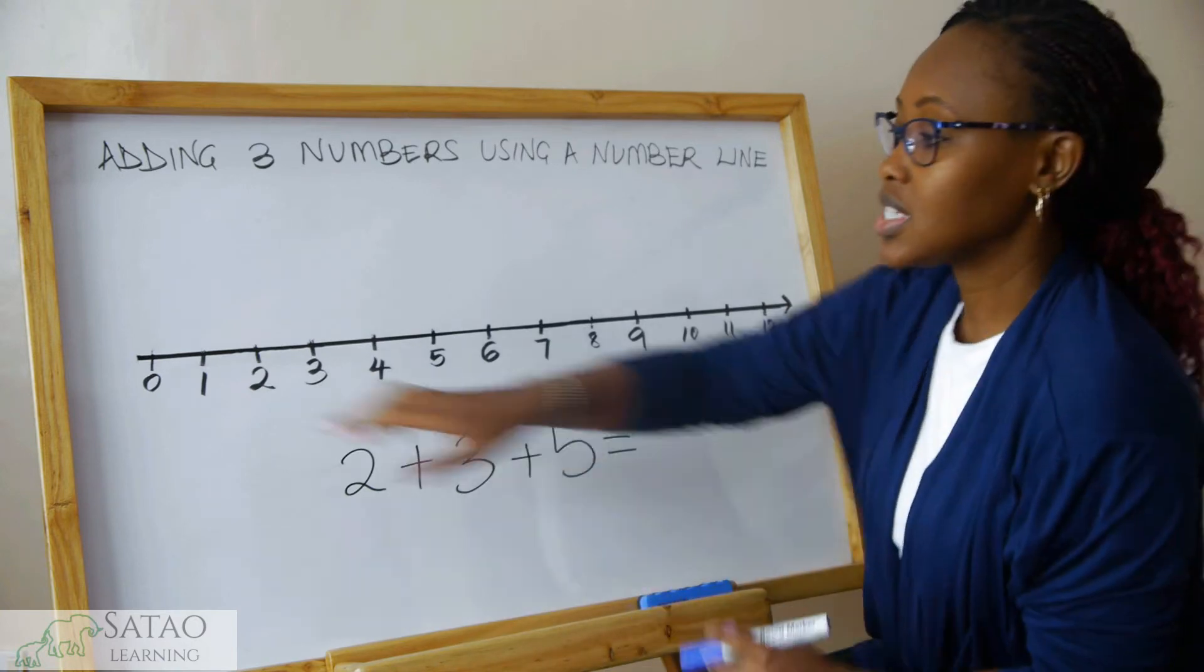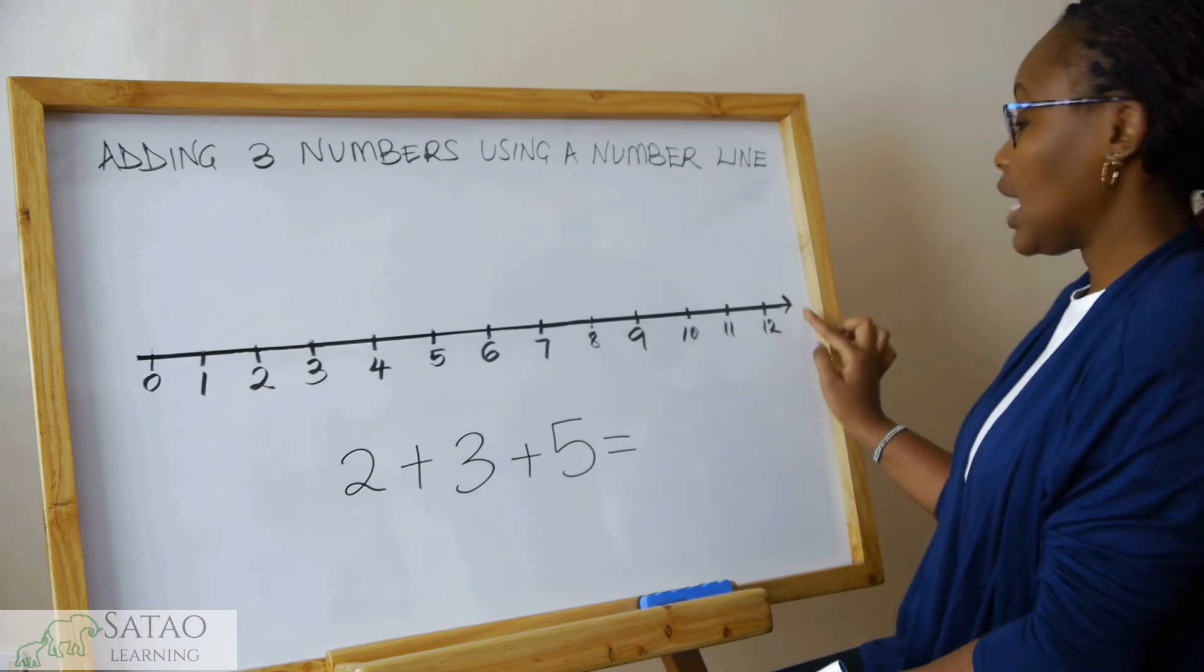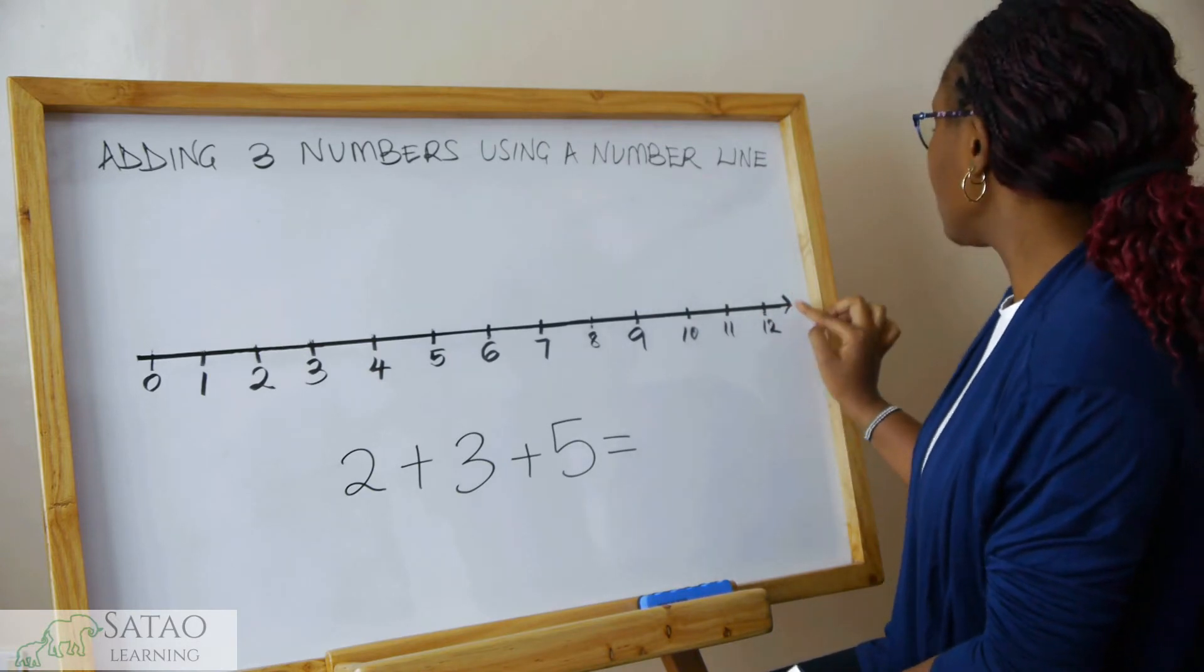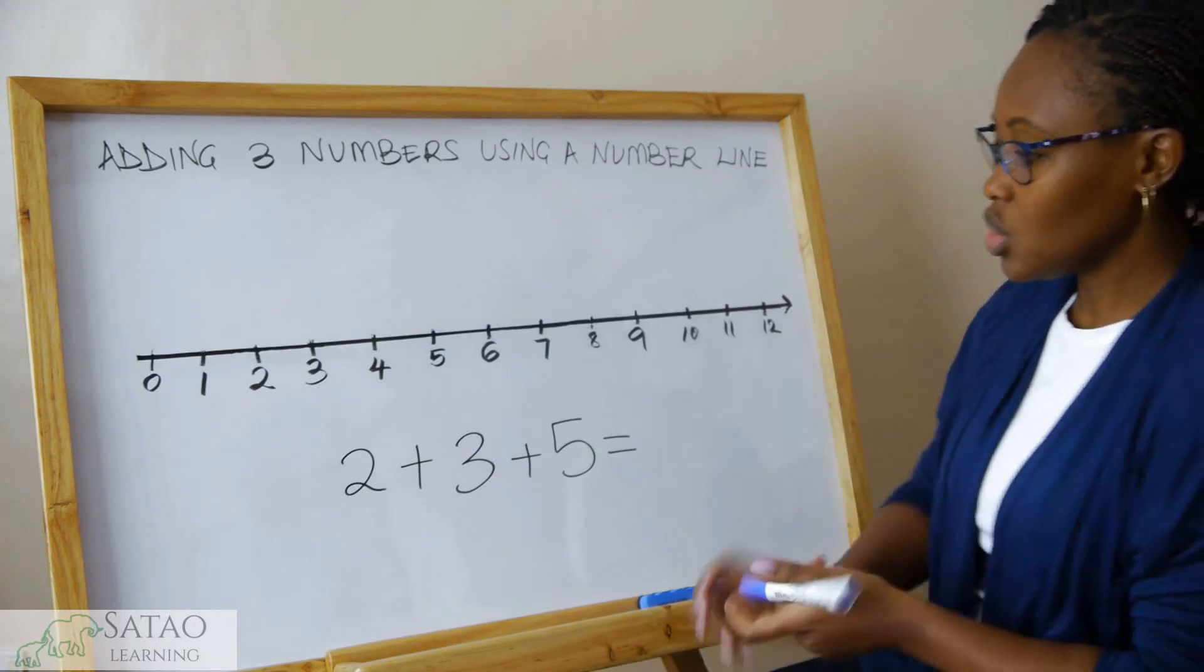You draw the number line starting at zero and then proceed on. At the end of the number line, make sure you put an arrow to show that the numbers can continue.